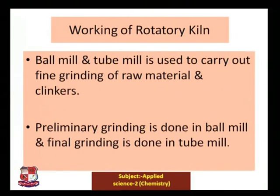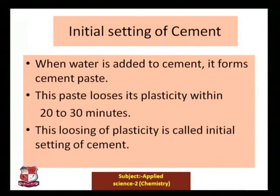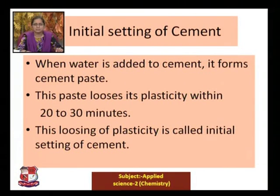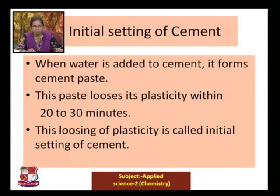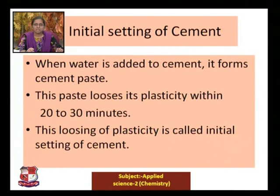Now let us discuss the setting of cement. In the initial setting stage, when water is added to cement, it forms a cement paste. This paste loses its plasticity within 20 to 30 minutes — this loss of plasticity is called the initial setting of the cement.